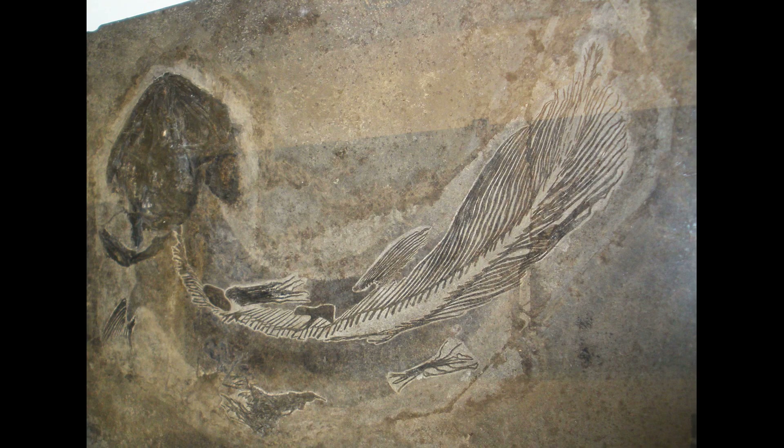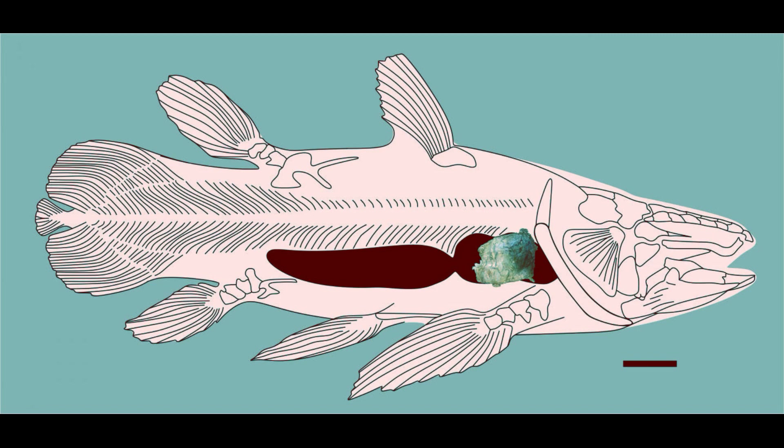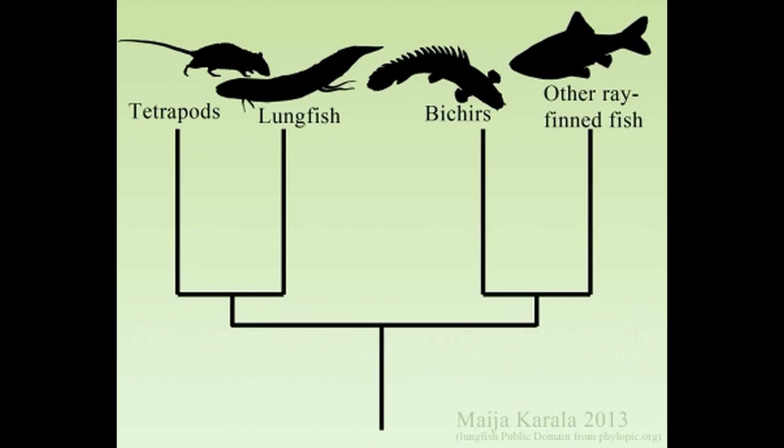Now we come to the coelacanths and their extinct kin. The word coelacanth comes from the first genus of coelacanth described, the late Permian Coelacanthus, which was named by Louis Agassiz in 1839. Like us and the very appropriately named lungfish, coelacanths have lungs — well, a single lung. The lung is vestigial, not being able to perform all of its ancestral functions. It's filled with fat and acts analogously like the swim bladder of ray-finned fish. The swim bladder of ray-finned fish is indeed a highly modified lung that is often no longer used for breathing, but more on that in the next tale.